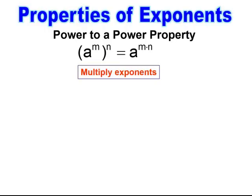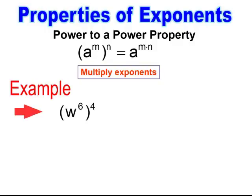This is the power to a power property. When you have a quantity raised to a power and what's inside has a power, to simplify you take the two powers and multiply them together. Power to a power — you multiply the powers. For example, w to the 6th power raised to the 4th power: I multiply the two powers together to get w to the 24th power. Here we have s to the 0 power raised to the 4th power. When I multiply the powers, 0 times 4 equals 0, so my solution is 1 because I have s to the 0 power.